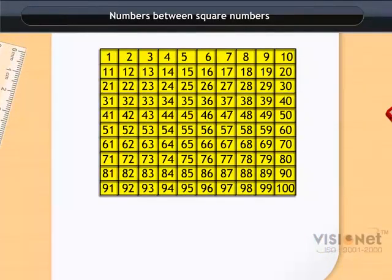Let us now see if we can find some interesting pattern between two consecutive square numbers. 1 is the perfect square. The next perfect square is 4.